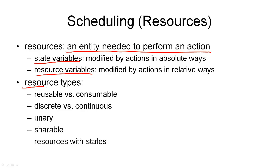There are a number of different resource types that we can distinguish, and often the algorithm for solving scheduling problems is associated with a given resource type. The most common distinction is reusable versus consumable resources. Reusable resources are, as the name suggests, reusable — they are available to another action after one action has completed. This could be, for example, a truck that we use to transport something from one location to another; after the transporting is done, the truck is available to another action. Consumable resources, on the other hand, are used up by the action — an example of that would be the fuel used by the robot.